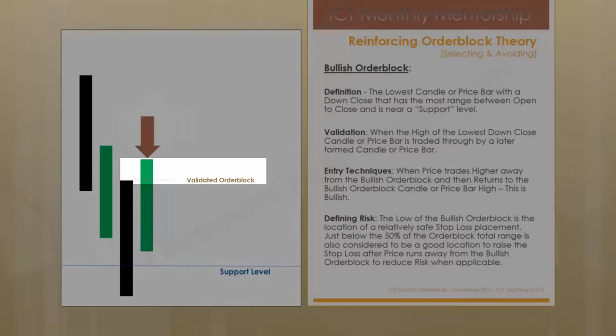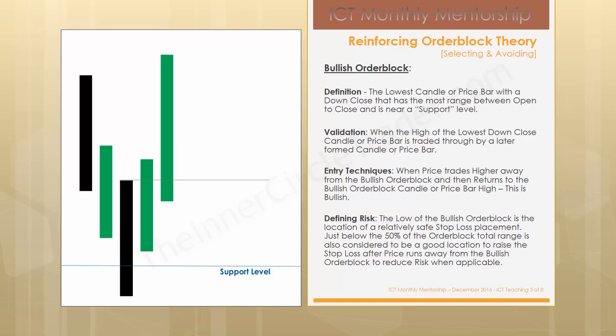Eventually price will run away. At this point, if you didn't enter on a retrade at the bullish order block's high, you're simply going to be waiting for price to want to pull back. Now we have indications that there has been displacement in the marketplace — someone with a whole lot of money and interest wanting to see higher prices is now in play. They are participating in the marketplace. This is the evidence in price action that you have institutional sponsorship behind the move.